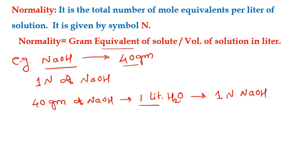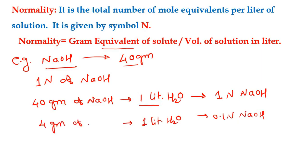If you want to prepare 0.1 normal NaOH in 1 liter of solution, you need to use 4 grams of NaOH. In this way, you can change the amount of NaOH and the amount of solvent to prepare solutions of different concentrations.